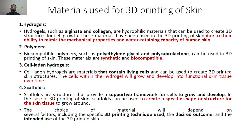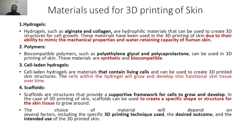Cell-laden hydrogels are materials that contain living cells and can be used to create printed skin structures. The cells within the hydrogel will grow and develop into functional skin tissue. Scaffolds provide a supportive network for cells to grow and develop, helping to create a specific structure for the skin tissues to grow around. The choice of material depends on several factors including the specific 3D printing technique used, desired outcomes, and the intended use.